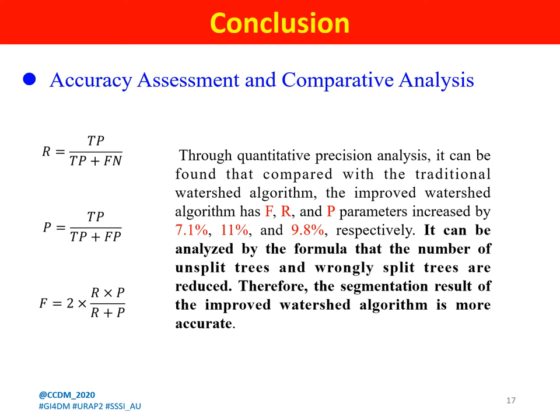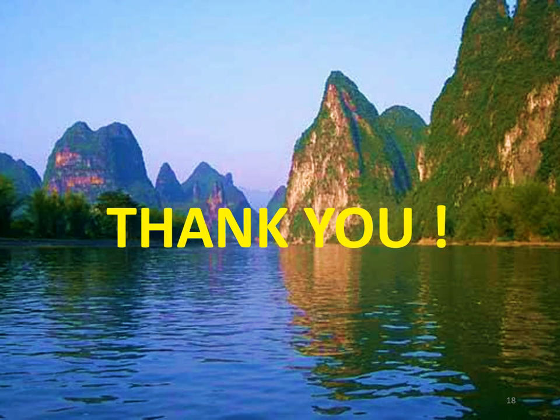The third part is the conclusion. It can be analyzed from the results that the number of unsegmented trees and wrongly split trees is reduced. Therefore, the segmentation result of the improved watershed algorithm is more accurate. Thank you so much.